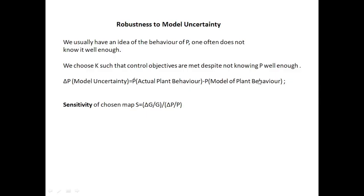As I had discussed, these two aspects are important because we don't know exactly the behavior of P. What we usually use is the model of the plant, and what actually is the plant behavior may not be exactly equal to our model, and hence it's called model uncertainty. The sensitivity is defined as the delta change in map over the map over ΔP/P.